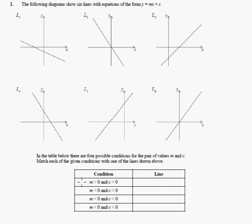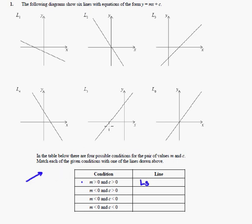The first condition: m is greater than zero and c is greater than zero. So we're looking for a line with a positive gradient and a positive y-intercept. That one has a positive m but a negative y-intercept. This one has a positive gradient and a positive y-intercept, so it's going to be L5 — it crosses at a positive number.